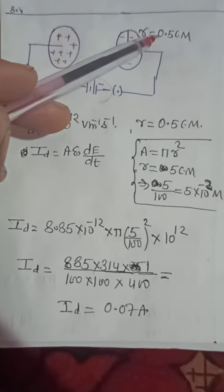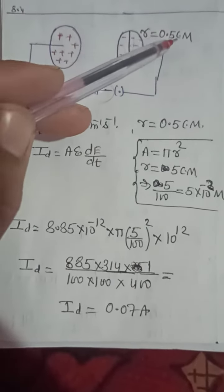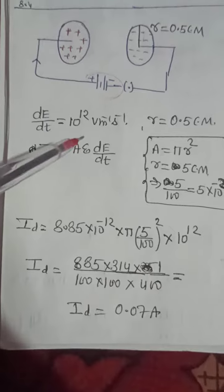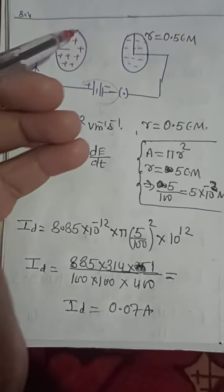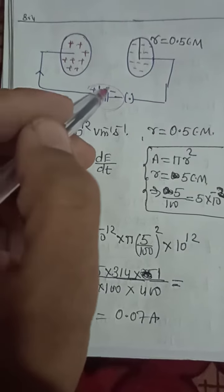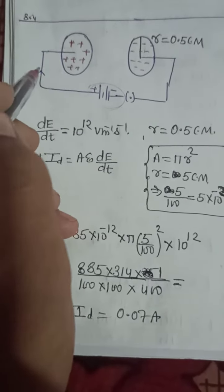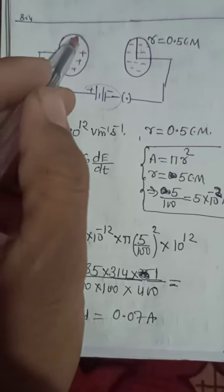The radius of this circular plate is given 0.5 cm. And this is the given data, change in the electric field.